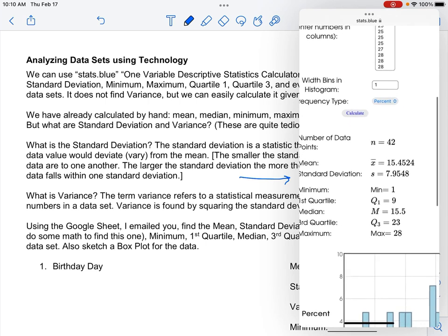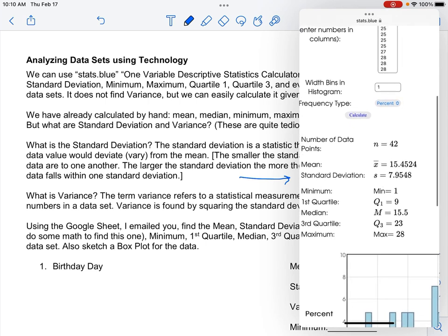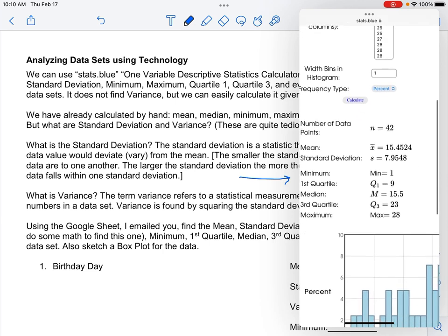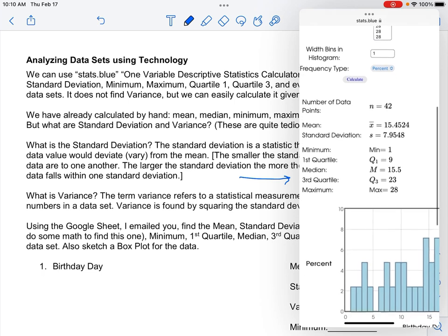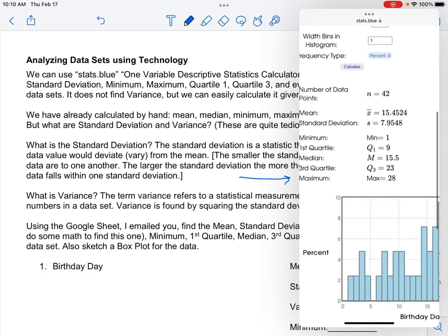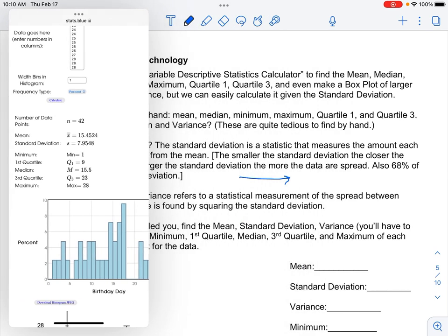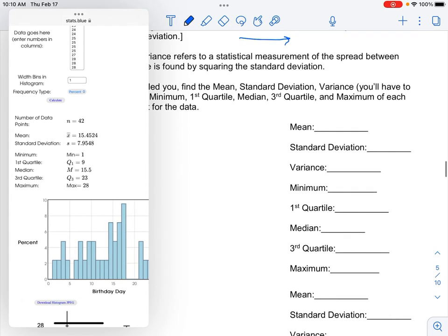This data set has 42 points. Our mean is 15.4524. I'm going to write all of those decimal places. That just makes it more accurate than the standard deviation. It's 7.9548.